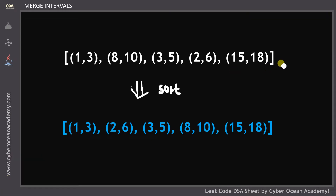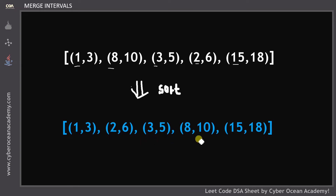If the intervals are not sorted, we have to sort them first. For example, consider unsorted intervals. We sort them with respect to the first index of every interval, giving us [1,3], [2,6], [3,5], [8,10], [15,18] — now sorted in increasing order by first index. This is the very first step. If already sorted, that's fine; if not, we sort it.